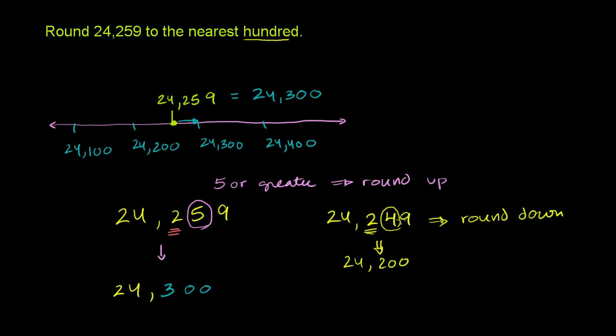24,249 is going to be sitting right over here someplace. So it's going to be closer to 24,200. 24,200 would be the nearest hundred when we round down. In this case, for the case of the problem, 24,259, the nearest hundred is 24,300. We round up.